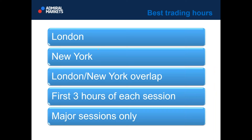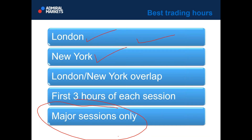Best trading hours: London, New York, London-New York overlap. First three hours of each session — first three hours of London, New York, and Tokyo. Major sessions only — don't forget it. If you are stuck in a trade during a session because you have stumbled into a major session interval, like London lunch, some form of profit-taking, or pre-news when the market is ranging, it's always better to take profits than to make additional risks in the market.